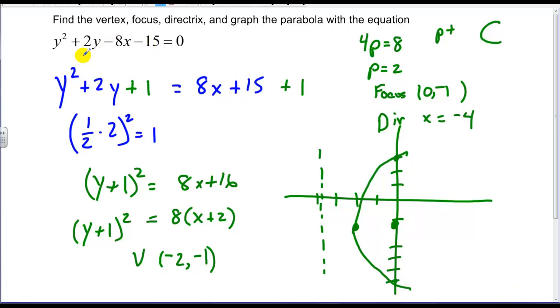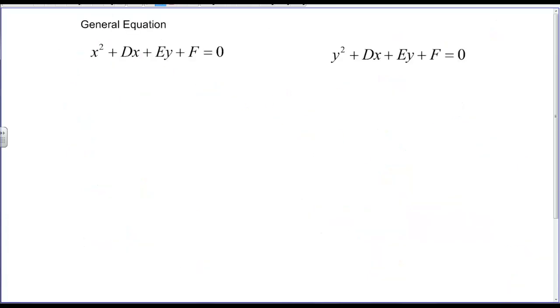So what this form has brought up is it's brought up something called a general form. General form for parabolas are as follows: x² + Dx + Ey + F = 0, and that gives us some kind of a parabola that either goes up or down. And y² + Dx + Ey + F = 0 gives us some form of parabola that either opens to the left or it opens to the right.